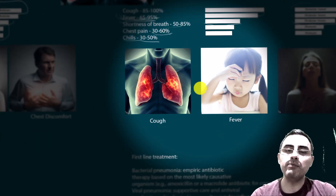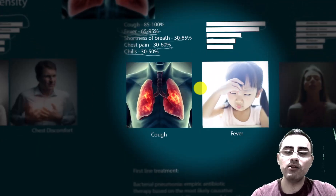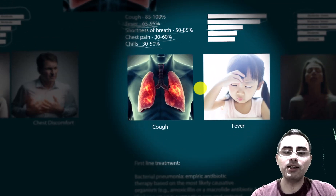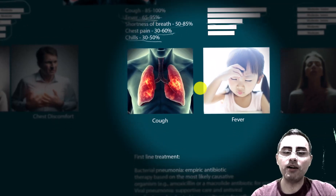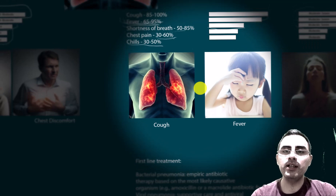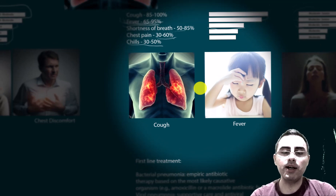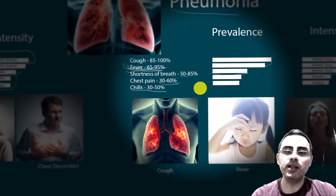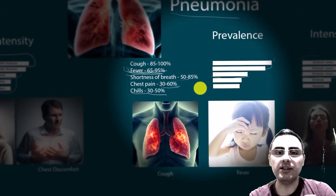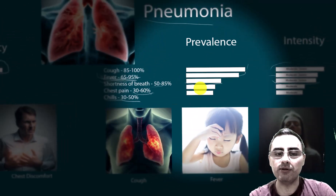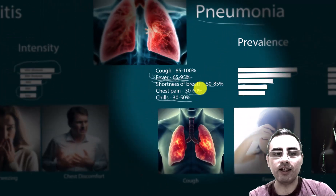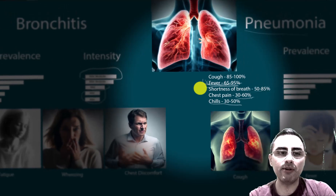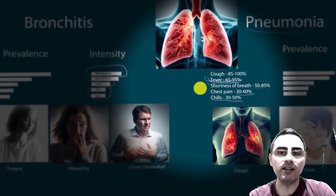In the case of pneumonia with bacterial infection, antibiotics are a must — such as amoxicillin or macrolides for community-acquired pneumonia. In the case of viral pneumonia, supportive care is usually enough. That's the key difference between bronchitis and pneumonia.